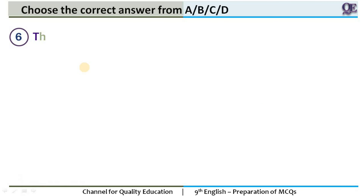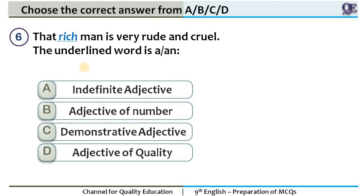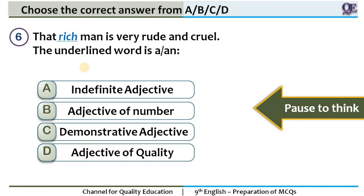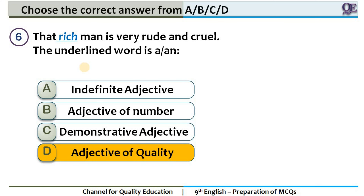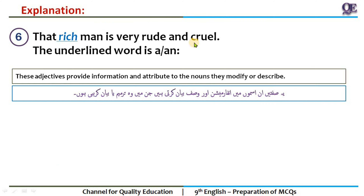After this lecture you will not make mistakes and will get 100% marks. Question 6: 'That rich man is very rude and cruel.' The underlined word is 'rich.' 10 seconds to think. The answer is adjective of quality. 'That' is demonstrative adjective as we just learned, but here 'rich' is underlined. Rich is a quality — you will recognize it from the name itself. Rich man, poor man, intelligent man — these words show quality, so they are called adjective of quality. Their number of categories is large, but if you pay attention to the word, you will recognize it immediately.